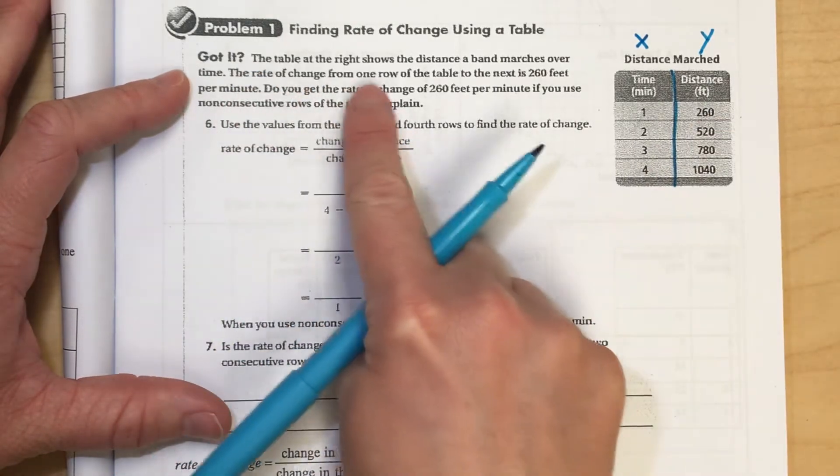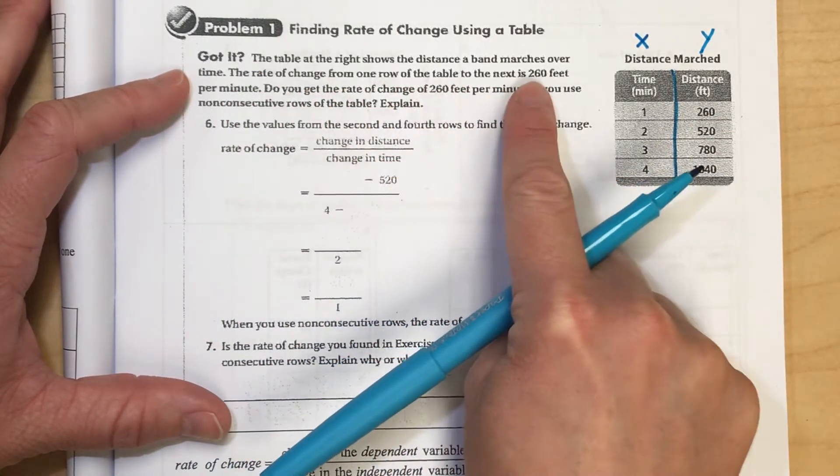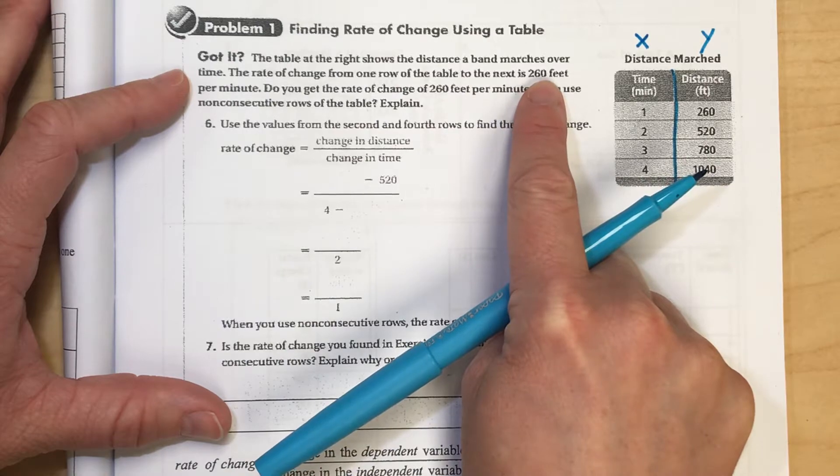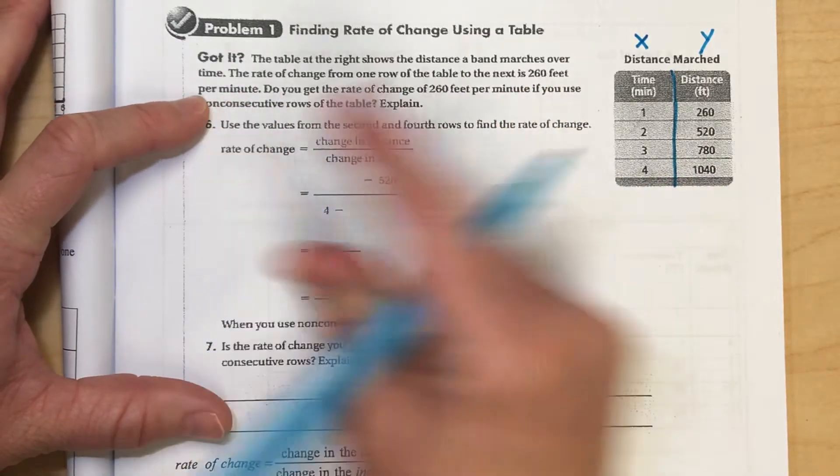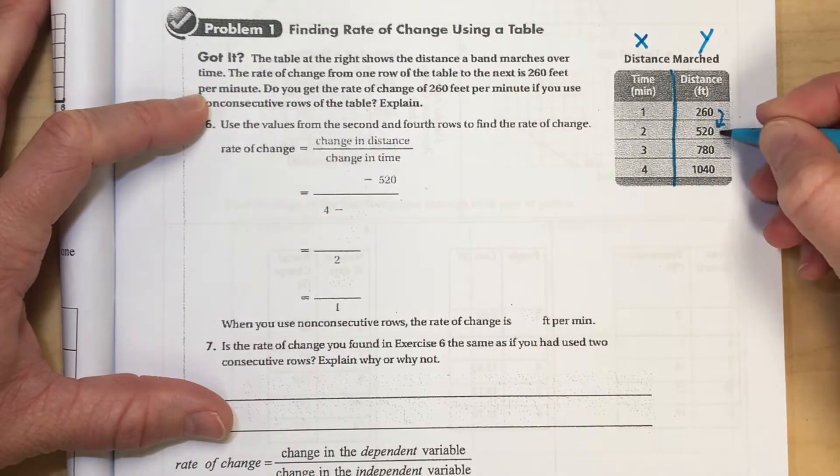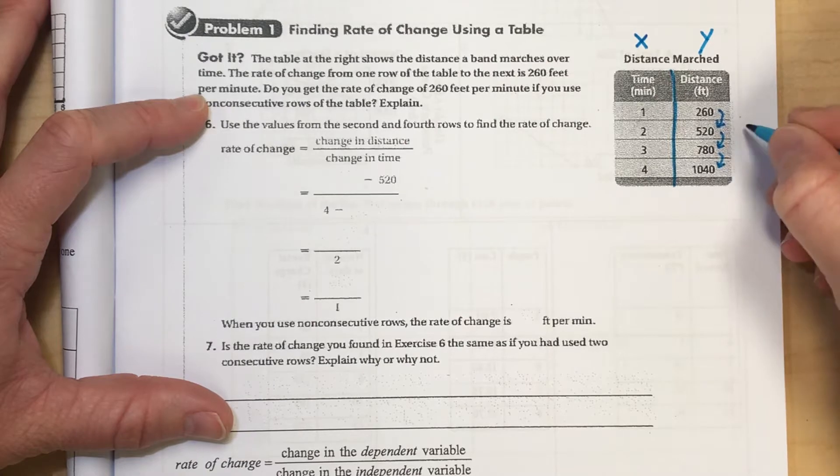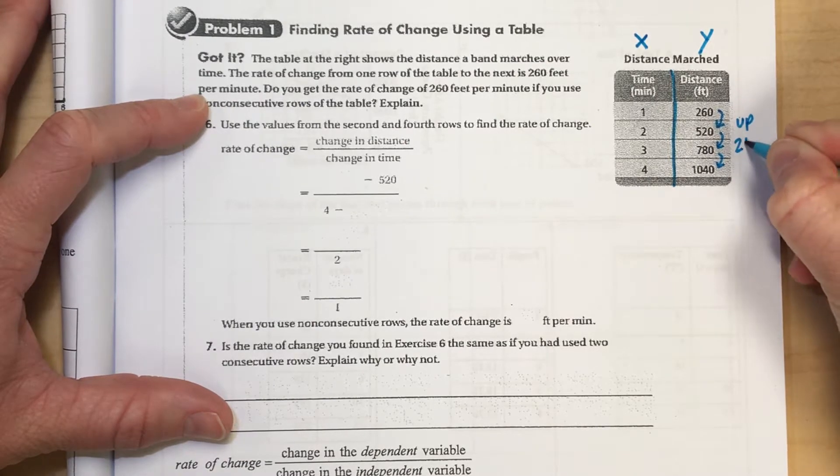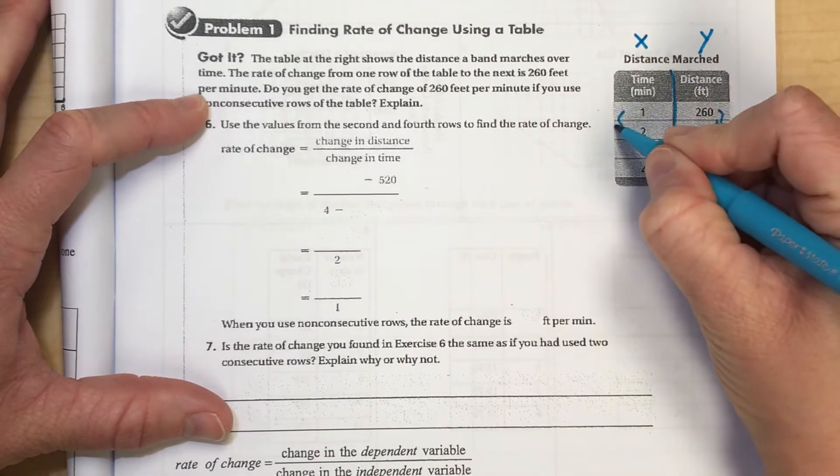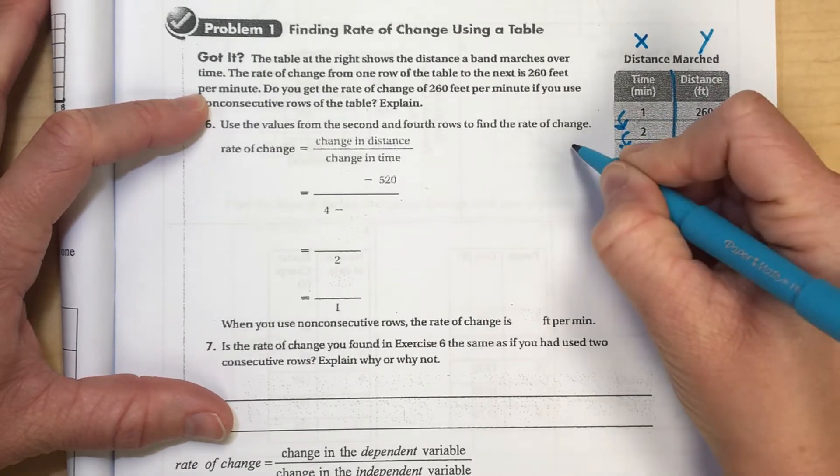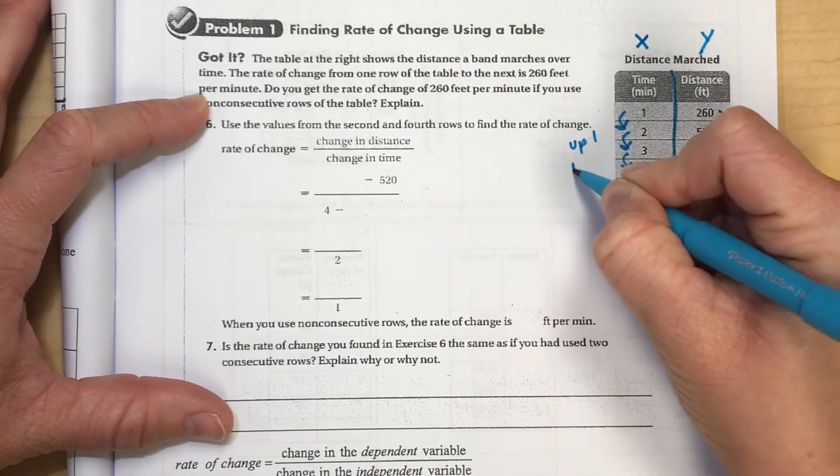And then it says the rate of change from one row of the table to the next is 260 feet per one minute. So you'll see these are going up by 260 feet per one minute. So this is going up one minute.